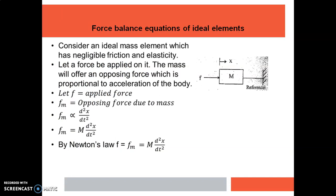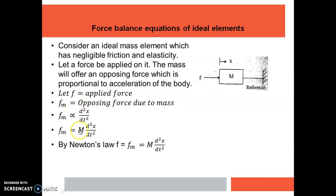Now we look into the force balance equations of ideal elements. Consider a mechanical system where a force F is applied. A displacement will occur in the same direction, indicated using X. Due to the applied force, this mass will exert an opposing force called Fm. This opposing force due to mass will be proportional to the acceleration of the body, so we can write Fm is proportional to d²x/dt², and therefore Fm equals M times d²x/dt².